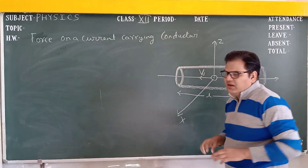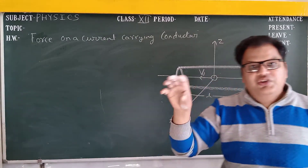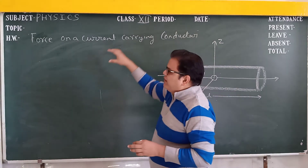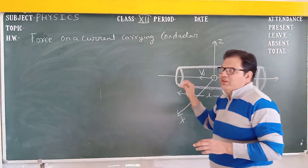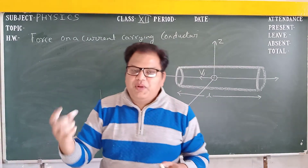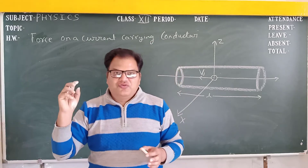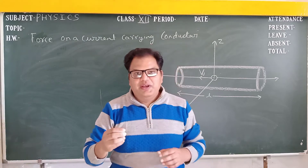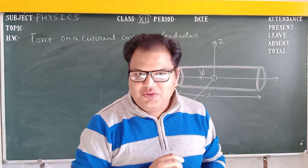Now, what happens when force is applied on a current-carrying conductor? When we place a conductor in the magnetic field, it also experiences a force. Why? Because a conductor is made of charge, and when current flows through the conductor it means electrons are moving, and electrons are also charged particles.